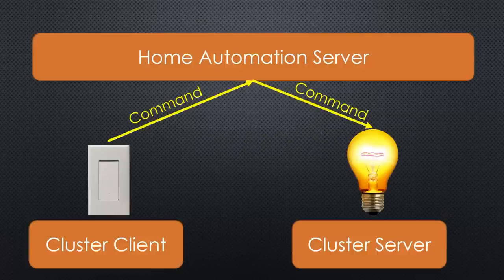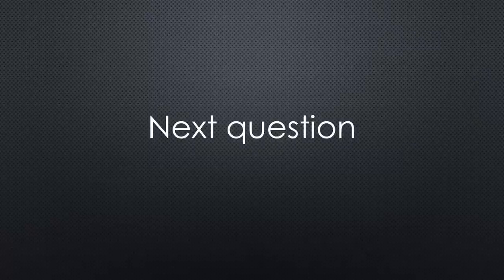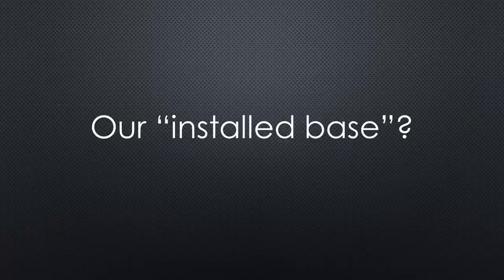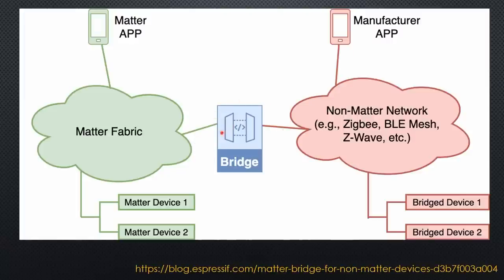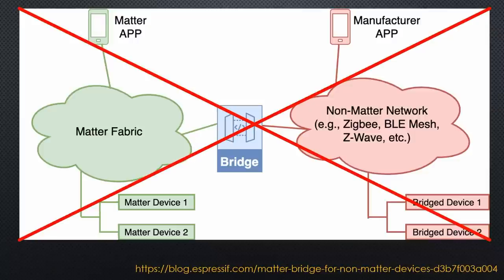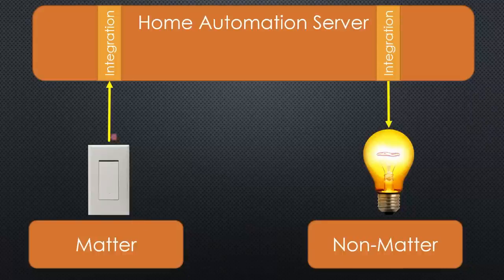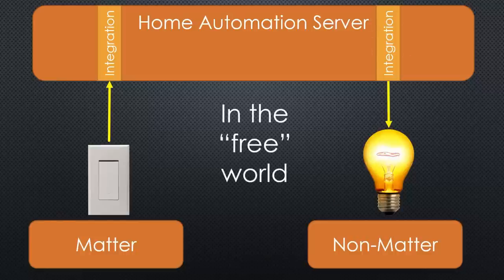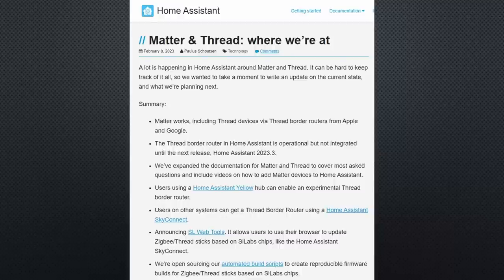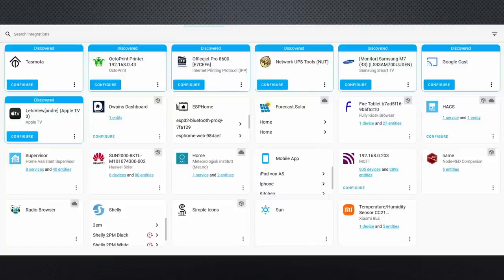Leaving aside this node-to-node communication, nothing is new for the top layer and it can easily be adapted and integrated. Another question arises: what happens with all my current devices? The idea is to bridge existing devices into the Matter world, but I think the bridging will be done on a higher level in the home automation software — at least for those of us living in the free world. Home Assistant already offers a Matter integration like all other interfaces. For us, Matter is just another integration.